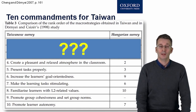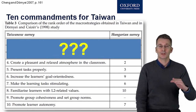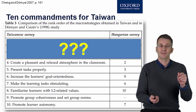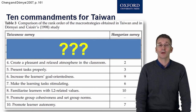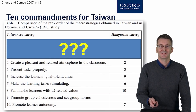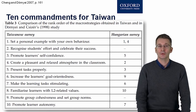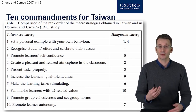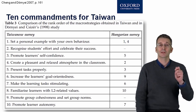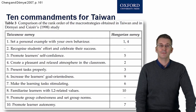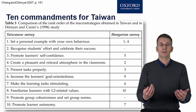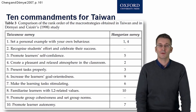Interestingly, Dörnyei did some follow-up research with a Taiwanese researcher to look at the top ten strategies for Taiwan, and there are a few differences. Can you guess what the top three strategies were for Taiwan? At number three: promote learners' self-confidence, which was number five in the Hungarian survey. Number two: recognize students' effort and celebrate their success — a new one which wasn't in the original survey. But still at number one: set a personal example with your own behavior. So clearly, the teacher is the number one factor in terms of motivating their students.